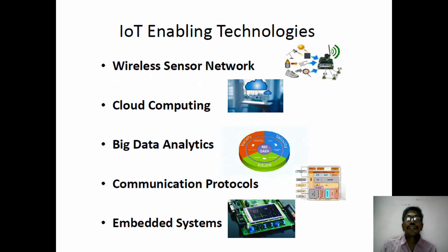These are the five major technologies which are involved in the Internet of Things. The first one is the wireless sensor network, cloud computing, big data analytics, communication protocol, and finally embedded systems.